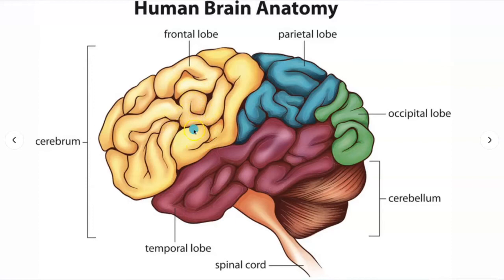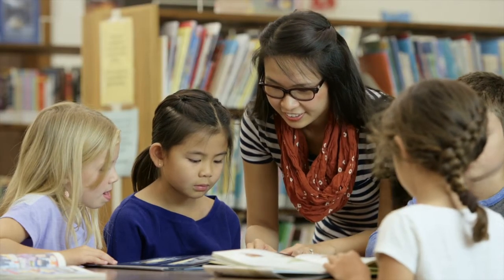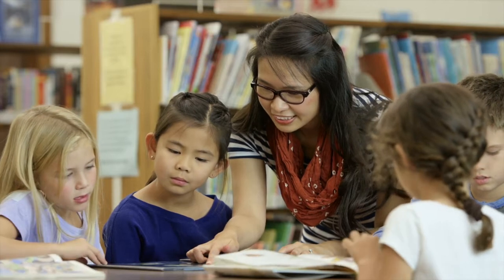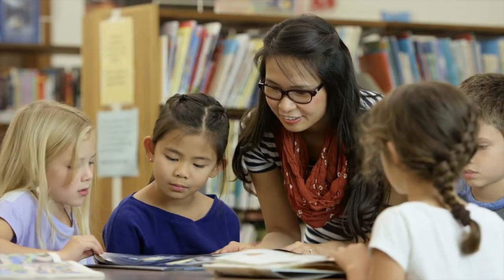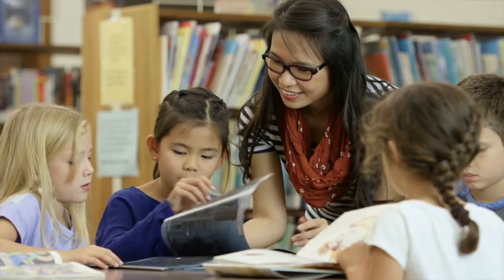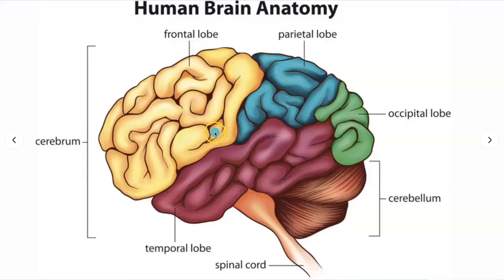Broca's area would be around here. And Wernicke's area is actually in the posterior temporo-parietal region — it transverses the temporal and the parietal lobes, but doesn't go into the occipital lobe. In the parietal lobe, that's where you interpret language and words. You have proprioception — knowing where your body is in the environment — sense of touch, pain, temperature in the sensory strip. You can also interpret signals from vision, hearing, motor, sensory, and memories.